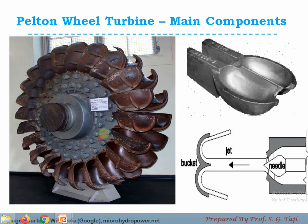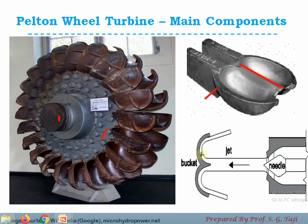The bucket is the most important part of the Pelton wheel turbine. The buckets are bolted on the runner circular wheel, which is coupled with the shaft. Looking at a typical picture of a single bucket, the shape of the bucket is double hemispherical, divided symmetrically into two parts by a ridge line at the center called the splitter. The jet of water strikes on that splitter at the center and gets divided into two halves after striking.